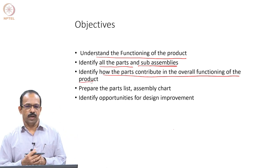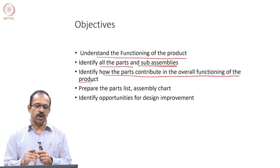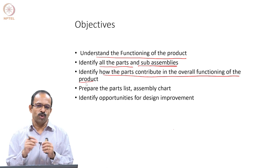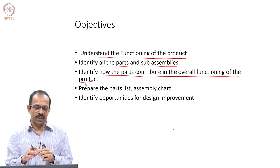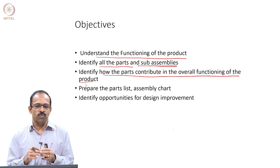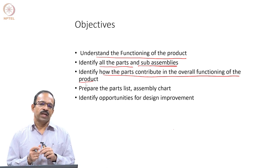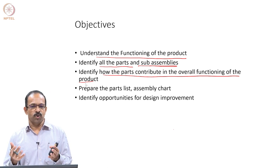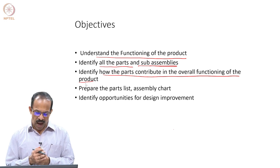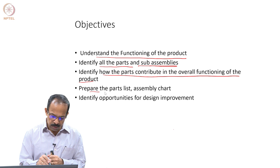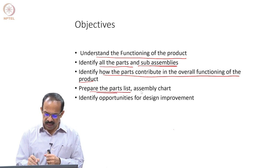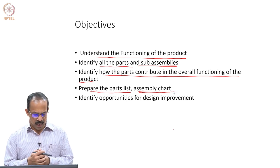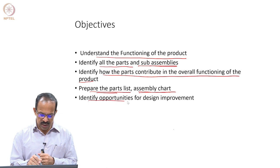Whenever you take out a part from the product, you need to look at what it is doing — what is its function. You do not need to worry about how to formally represent the function at this stage; at least try to understand what it is doing, whether it is providing power conversion, transmitting power, or providing support. What it is doing needs to be identified. Then prepare the parts list and an assembly chart in the same format as the previous class, and look at the opportunities for design improvement.